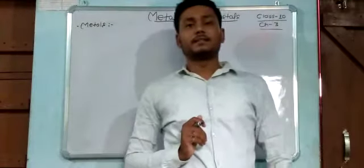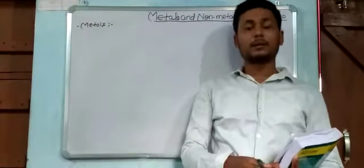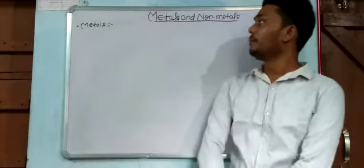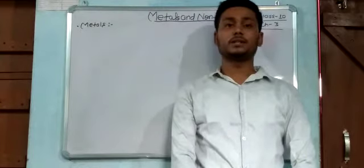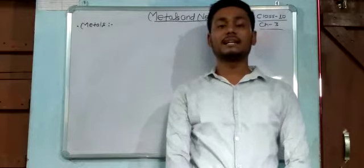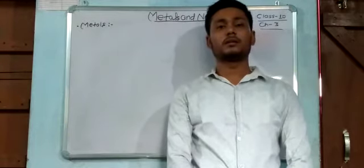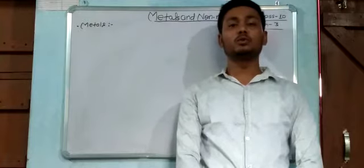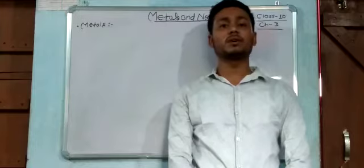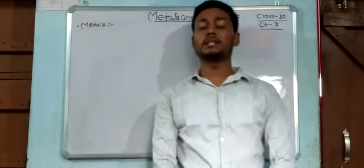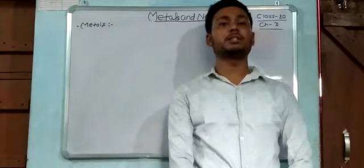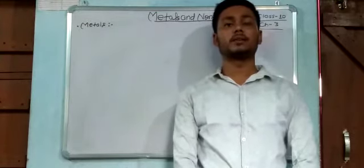In class 9 we already studied about metals and non-metals, in which we studied about cations and anions - how elements lose or gain their electrons to form cations or anions, or positive ions or negative ions. And the combination of these positive and negative ions forms a compound.